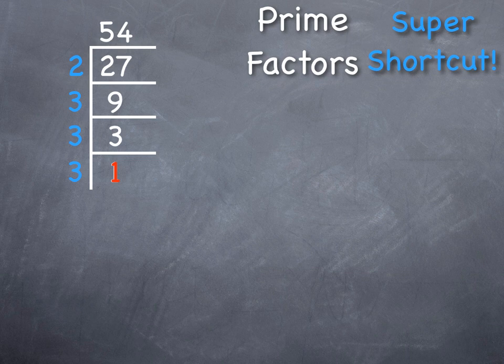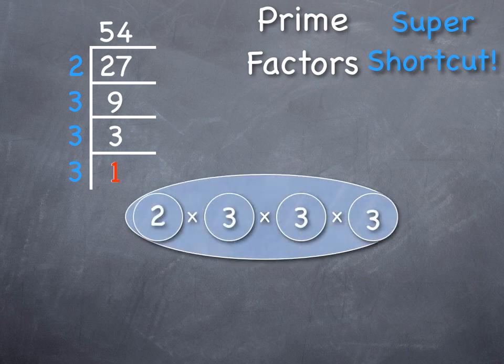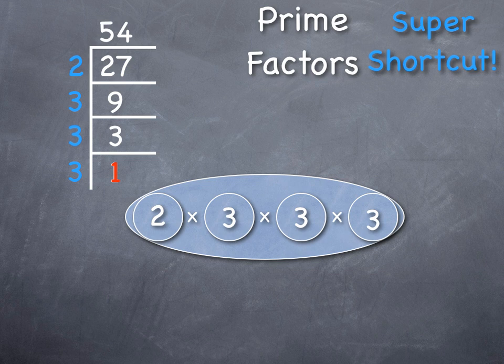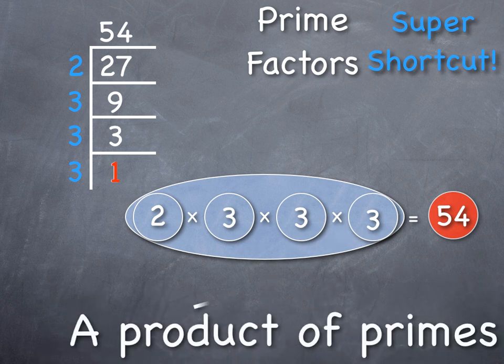And I do this until I get all the way down to the number 1. When I reach 1, I know that I'm done, and I have identified that product of primes. We can see it going down there, 2 times 3 times 3 times 3. That's my product of primes.